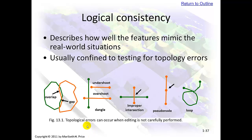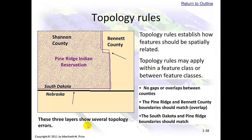Logical consistency. This is an undershoot, this is an overshoot, and this is an improper intersection unless this is a bridge going over this. Here is a loop. We don't get into topological errors much in this course because it's an intro course. Some more topology rules: Bennett County and Shannon County should have an identical border with no gap or overlap, and South Dakota should line up with Nebraska identically.